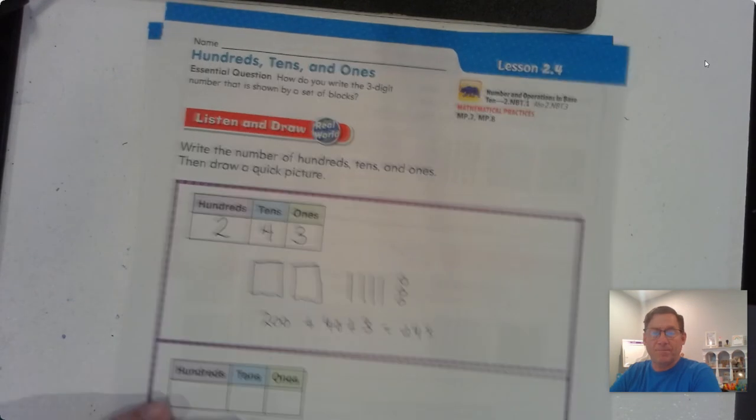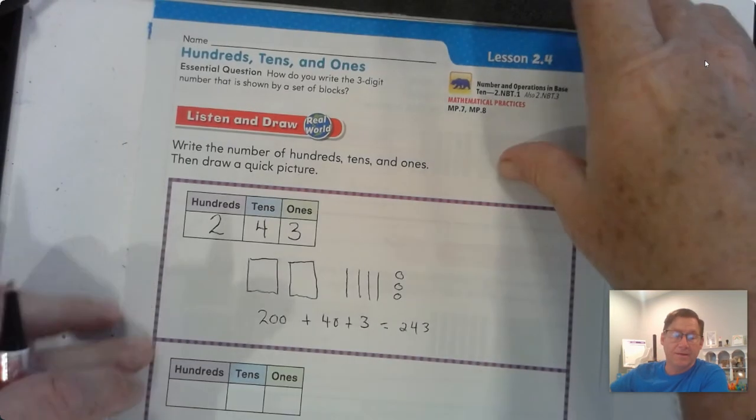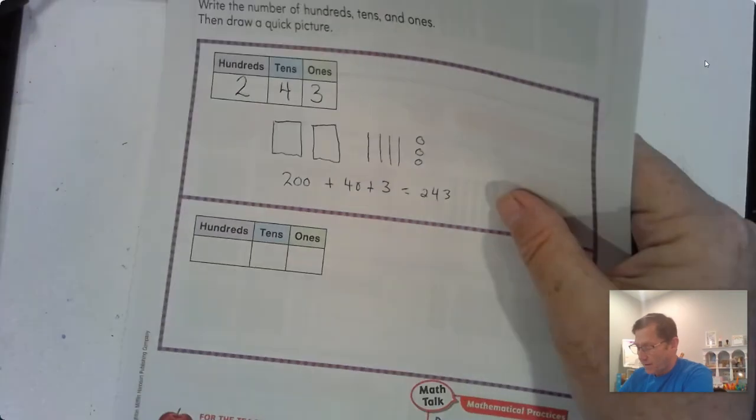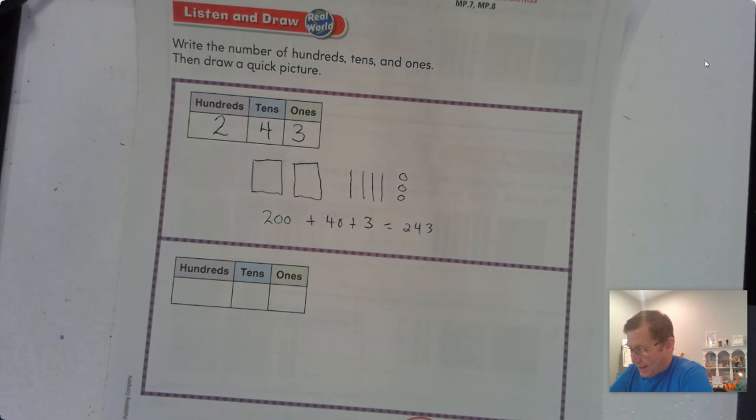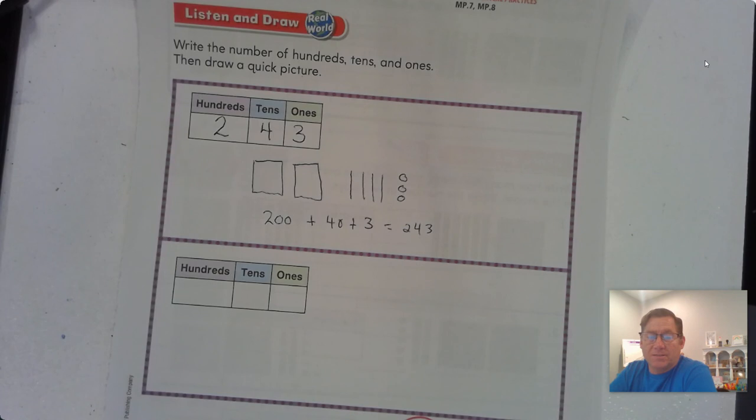All right. How about this part? Listen to this and then pause the video and fill out the place value chart and draw a quick picture. So what if Sebastian instead has 423 red blocks? So again, he has 423 red blocks. Fill out the place value chart and draw a quick picture of that number. Go ahead and pause the video.